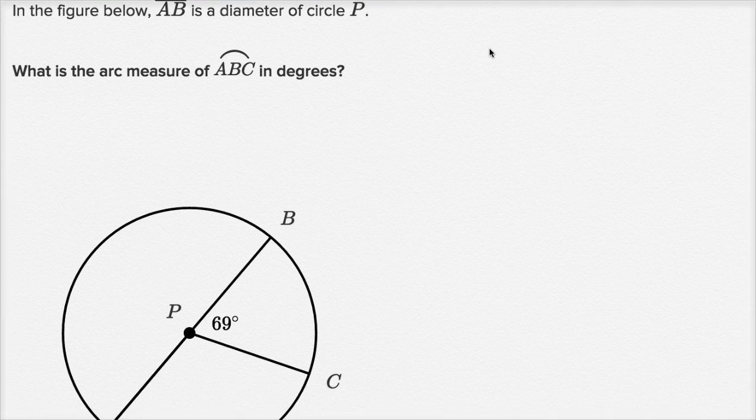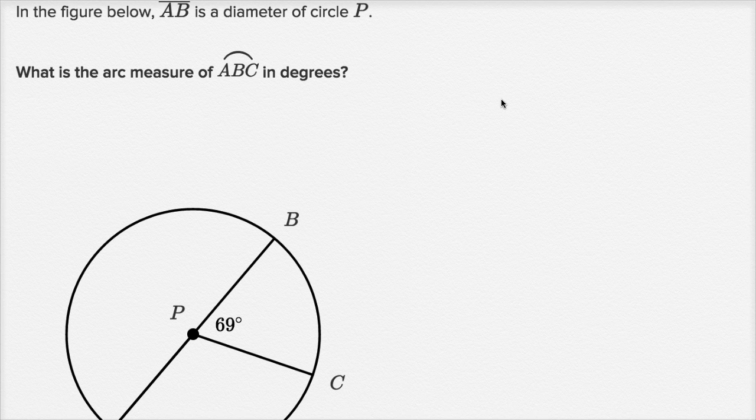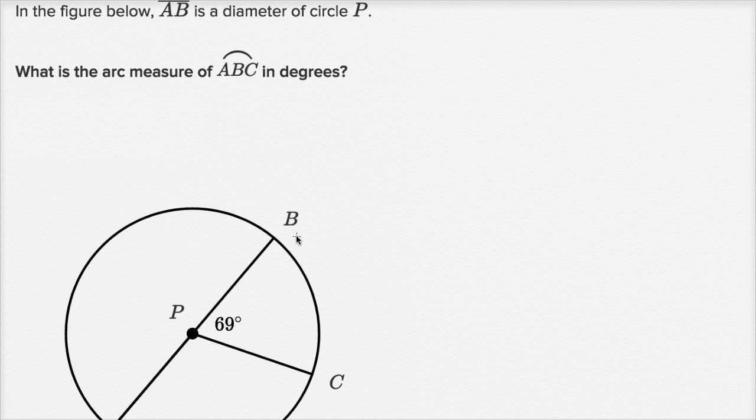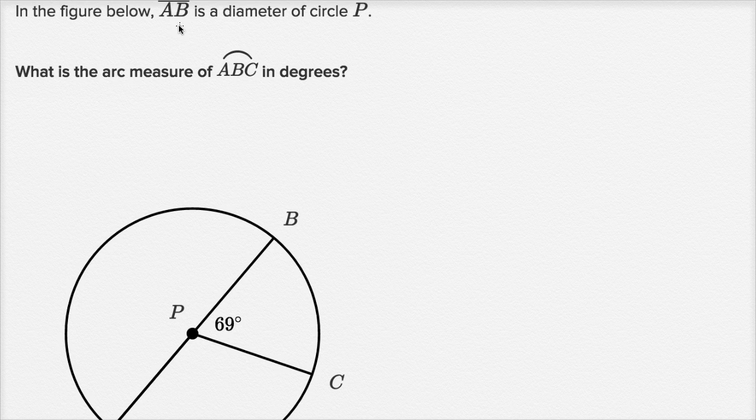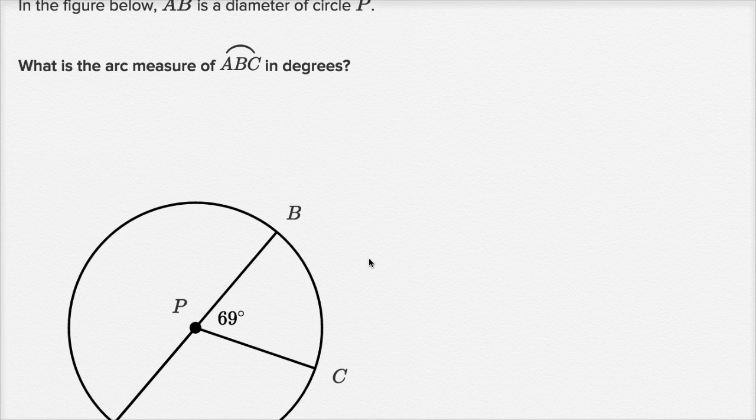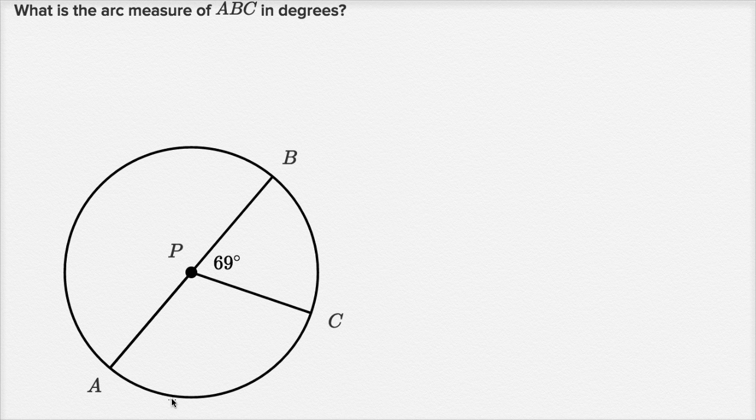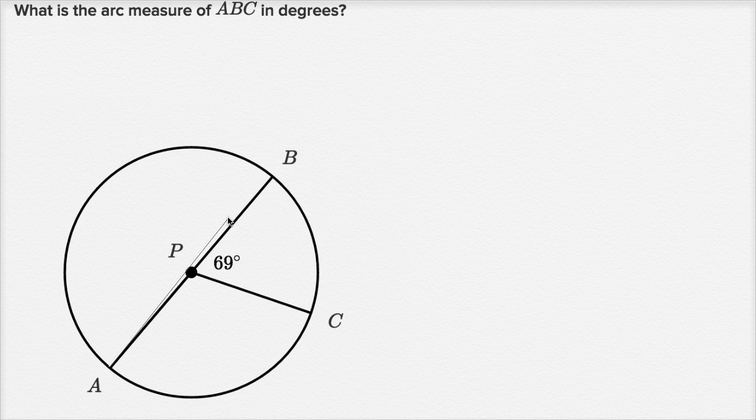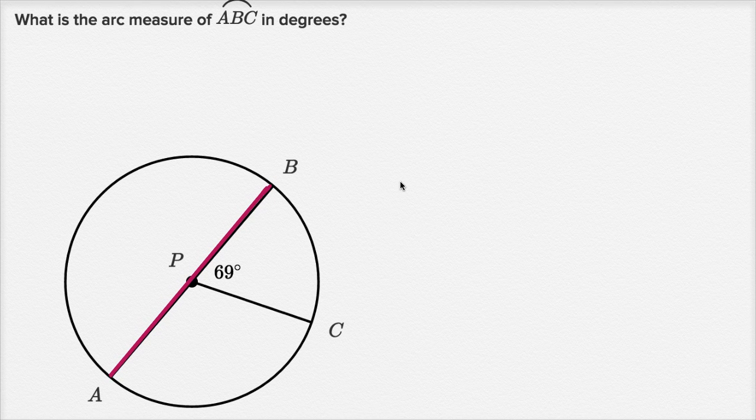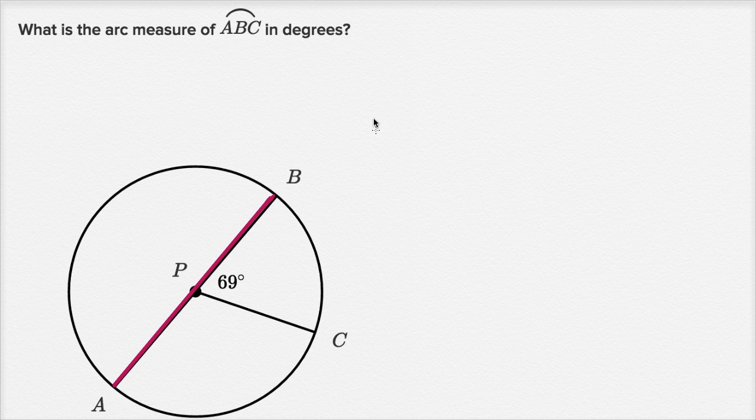So we have, in the figure below, and it doesn't quite fit on the page, but we'll scroll down in a second, AB is a diameter of circle P. So AB is a diameter, let me label that. So AB is a diameter, so it's going straight across the circle. What is the arc measure of ABC in degrees?